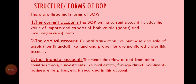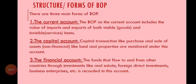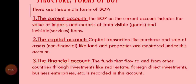The structure and form of Balance of Payment: there are three main forms. Balance of Payment consists of three major accounts. The first one is known as the current account. The Balance of Payment on the current account includes the value of imports and exports of both visible and invisible items. That is, the monetary value — the income — arising from the export and import of both goods and services is all included here. It is also double entry: on one side we see the receipts from goods and services, and on the other side the payments for goods and services.